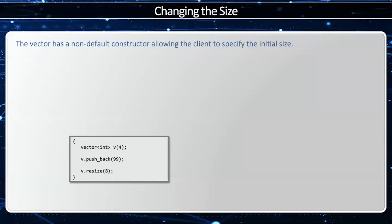We'll begin by explaining how the vector can change its size. The vector has a non-default constructor, allowing the client to specify the initial size. So when I say vector<int> v(4), then I'm going to create 4 elements in my vector. Notice how the default constructor is called on each element, and since the base type is an integer, the default constructor will fill each element with the number 0.